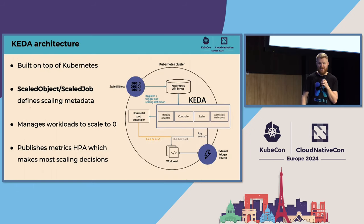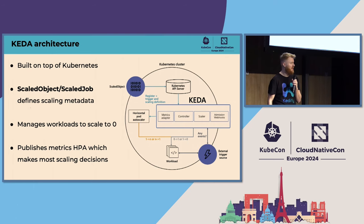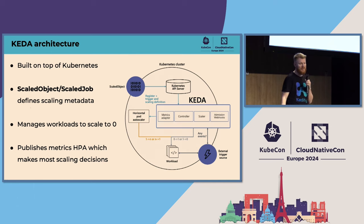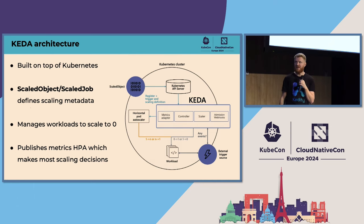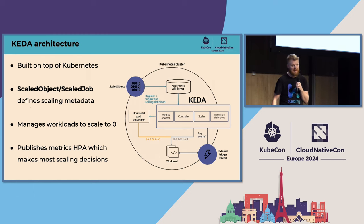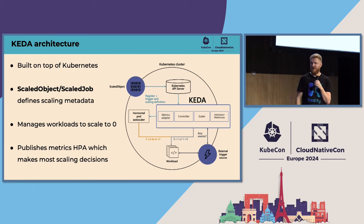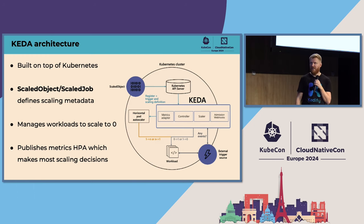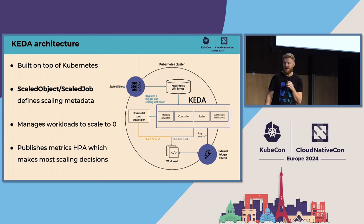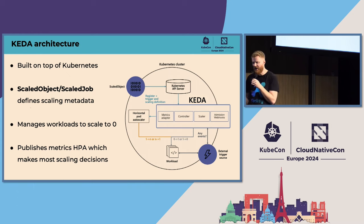Just a quick look at the KEDA architecture. We build KEDA on top of Kubernetes and reuse as much as possible — we don't reinvent the wheel. KEDA operates on the operator pattern: there's an operator managing ScaledJob and ScaledObject resources where we define scaling metadata. It provides metrics scraped from external services to HPA, which handles scaling from one to N replicas. KEDA itself manages scaling from zero to one.